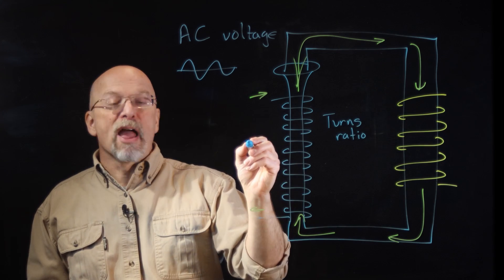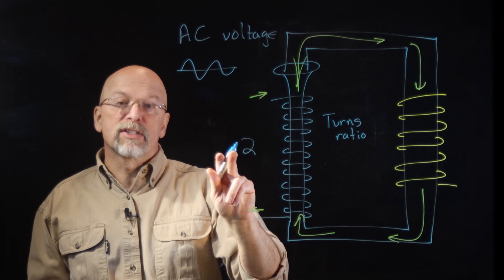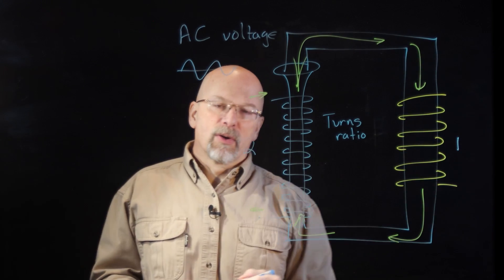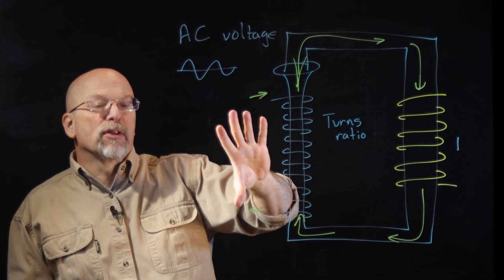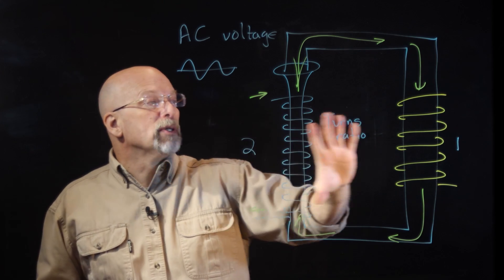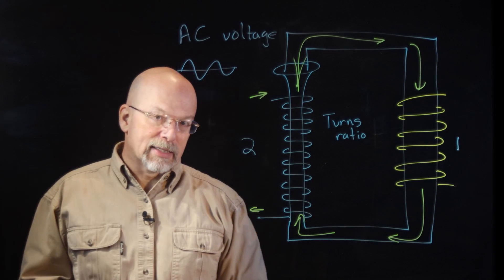will tell you the proportion or the ratio of the voltage from this side to this side. So let's say that for every two turns on this side, I have one turn on this side. That means that the voltage on this side is going to be twice that of the voltage on that side.